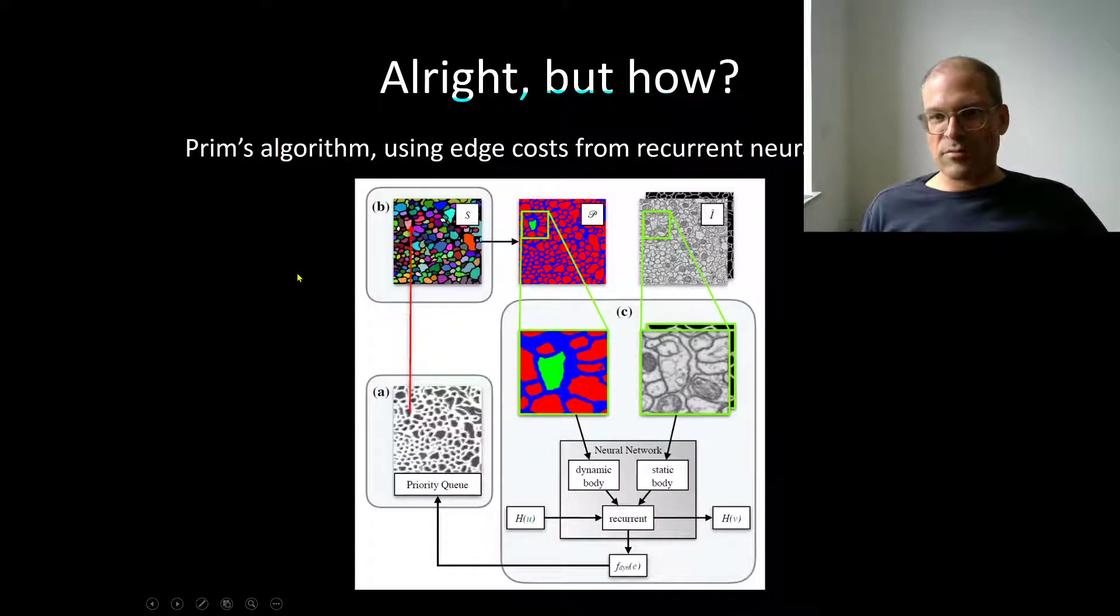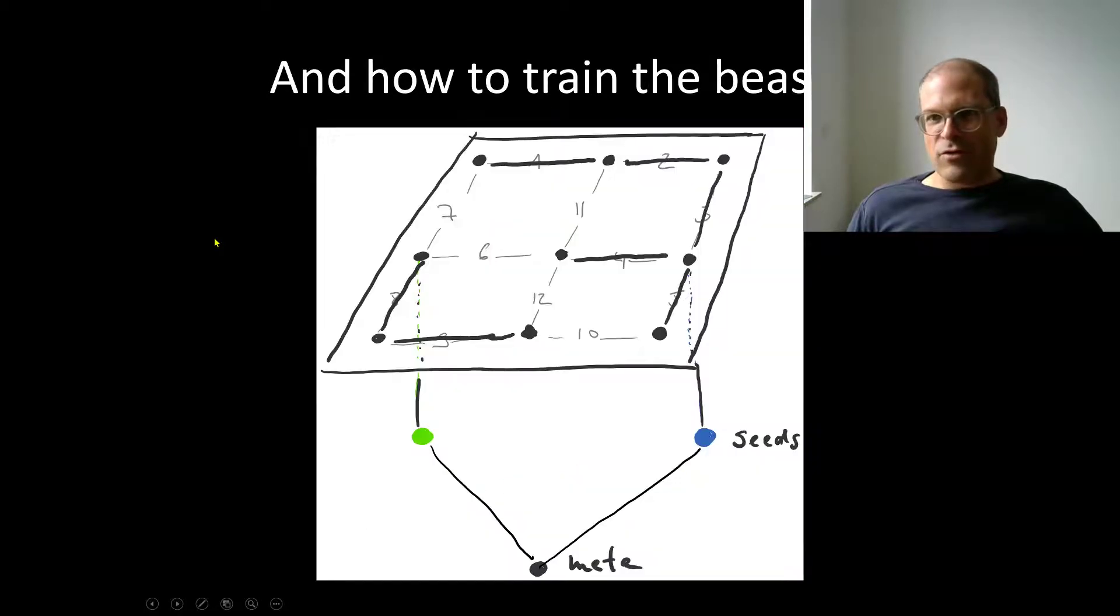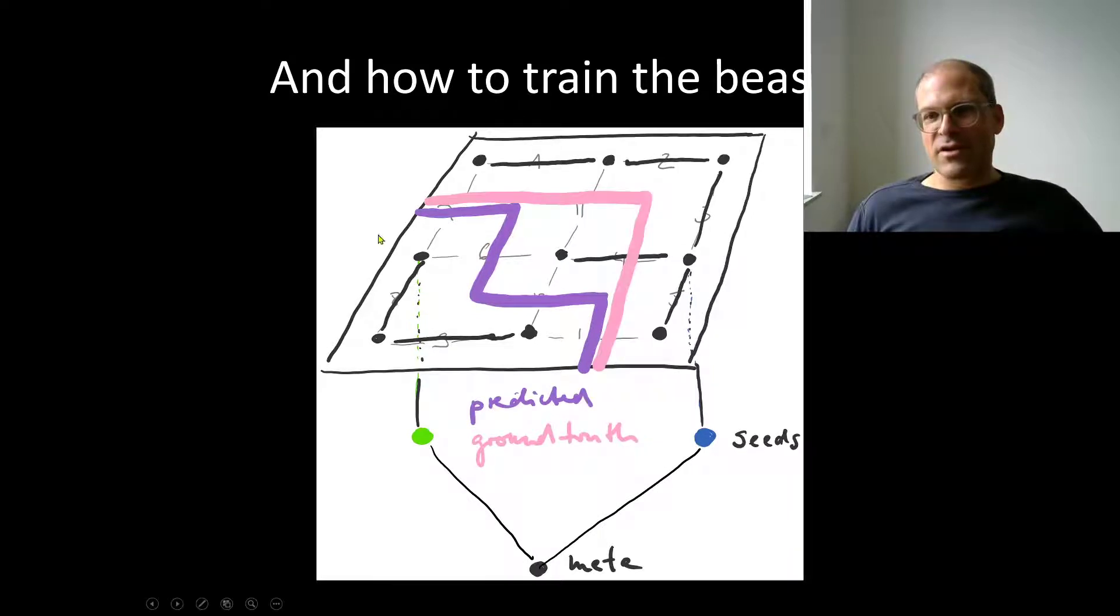And indeed this is how you can run the computations in terms of Prim's algorithm but using edge costs from a recurrent neural network. How to train it? So let's say that we have a predicted boundary and a ground truth boundary. And this will inform us how we should tweak the parameters in the neural network, in the recurrent neural network to give us edge weights that will lead to a more correct segmentation. So this is one example of a structured learning problem.